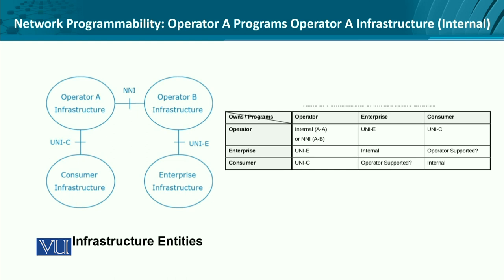In terms of their possible relationships in which some programming could be done, let's look at the operator, enterprise, and consumer placed across each other. We can think about an operator programming another operator — it could be an intra-operator programming scenario with operator A, or an inter-programming scenario where through the network-to-network interface, operator A programs the infrastructure of operator B. Then we have an operator that could program an enterprise, or an enterprise that programs an operator through the user-to-network interface, and correspondingly, we could make all possible combinations.